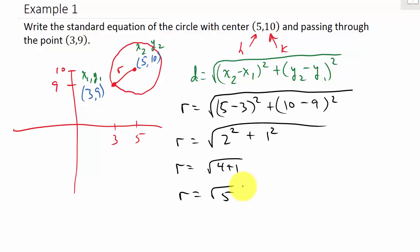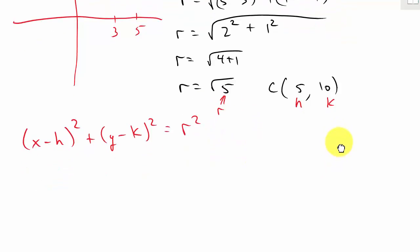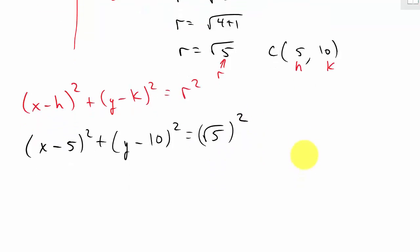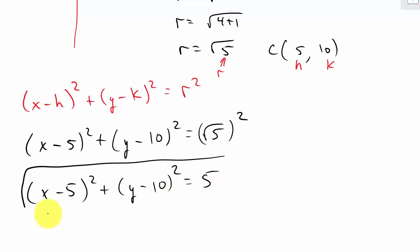We have our radius and we know our center is (5, 10). The standard form is x minus h squared plus y minus k squared equals r squared. Here's h, here's k, and there's r — so we just plug everything in. That gives us (x minus 5) squared plus (y minus 10) squared equals r squared. And r is the square root of 5, so square root of 5 squared is 5. My equation is (x minus 5) squared plus (y minus 10) squared equals 5.